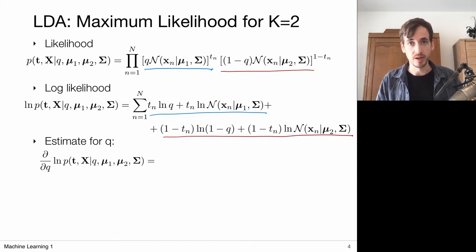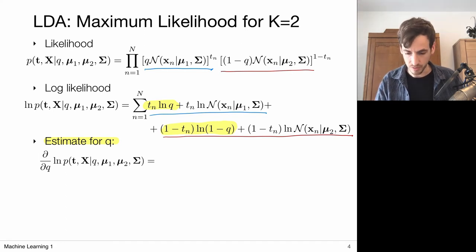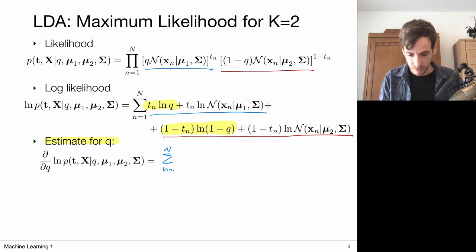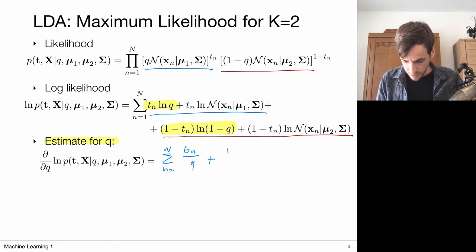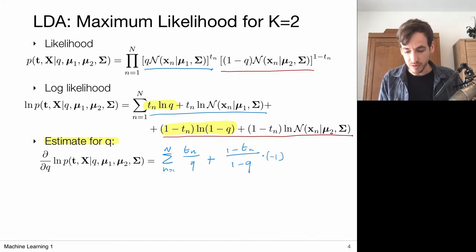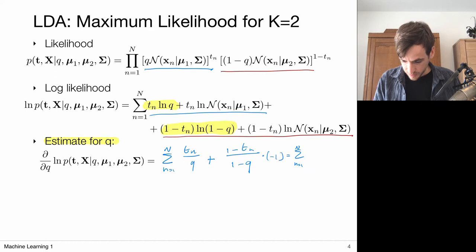To find an estimate for q, we identify the relevant terms in the log likelihood and take the derivative with respect to q. The derivative of the log gives 1/q, so we get t_n/q. By the chain rule, the second term gives -(1-t_n)/(1-q). Combining these: the sum from n=1 to N of [t_n(1-q) - (1-t_n)q] divided by q(1-q). Expanding the numerator, the t_n·q products cancel, yielding the sum of (t_n - q) divided by q(1-q), which we set to zero.